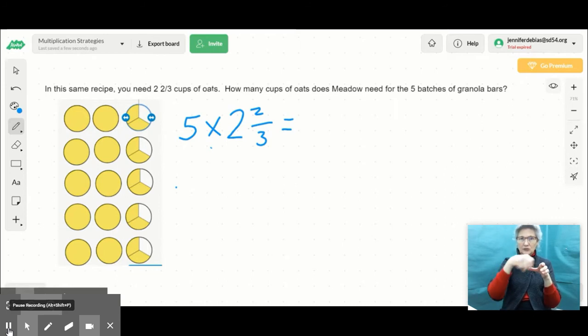And then I just did it 5 times for each batch. So here is 1 whole, 2 wholes, 2/3. 1 whole, 2 wholes, 2/3. So each line represents one of the batches of cookies.